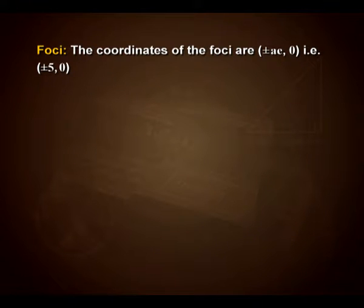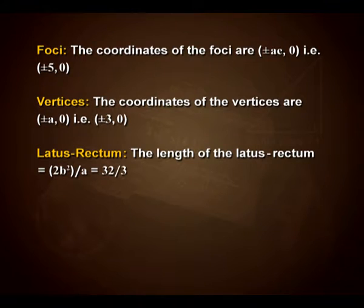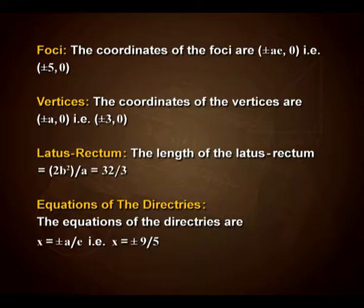Foci can be calculated here: the coordinates of the foci are (±ae, 0), that is (±5, 0). The coordinates of the vertices are (±a, 0), that is (±3, 0). The length of the latus rectum is 2b²/a = 32/3. The equations of the directrices are x = ±a/e, that is x = ±9/5.